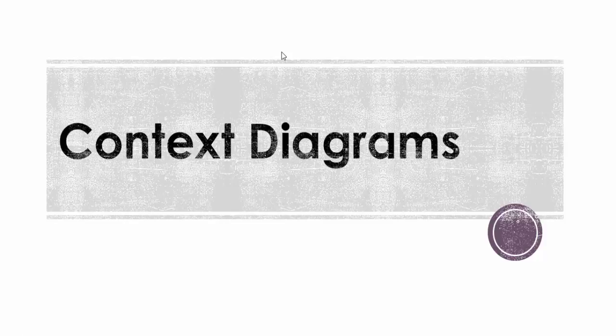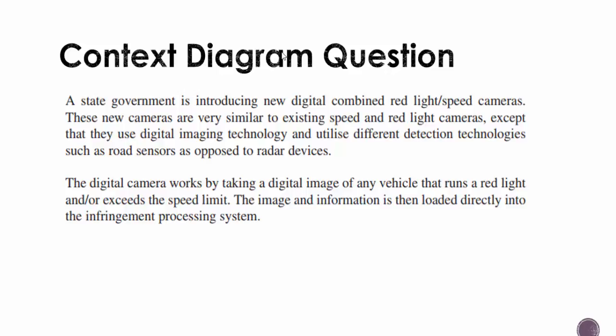Hi and welcome to today's topic. Today we're going to talk about context diagrams. This is a question from the IPT paper from 2010. A state government is introducing new digital combined red light speed cameras. These cameras use digital imaging technology and different detection technologies such as road sensors, as opposed to radar devices. The camera takes digital images of any vehicle that runs a red light and/or exceeds the speed limit, and the image and information is then loaded directly into the infringement processing system.